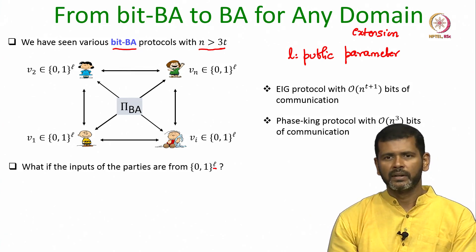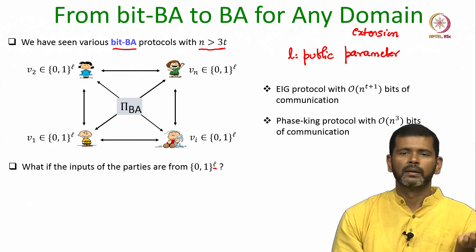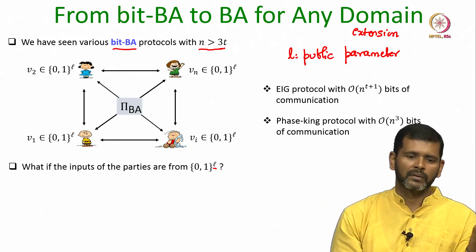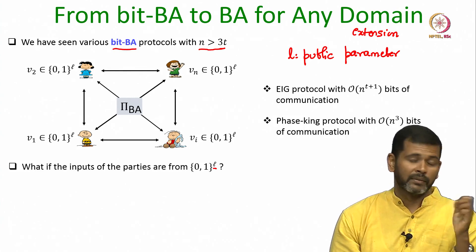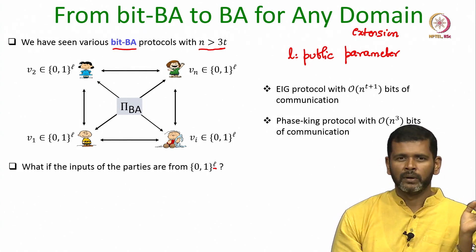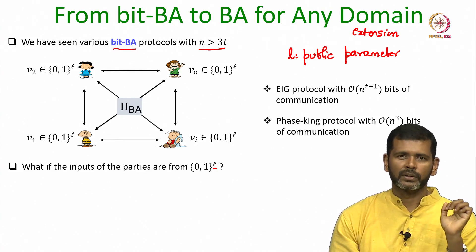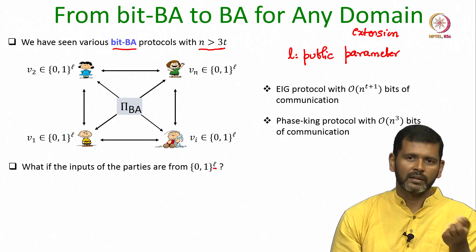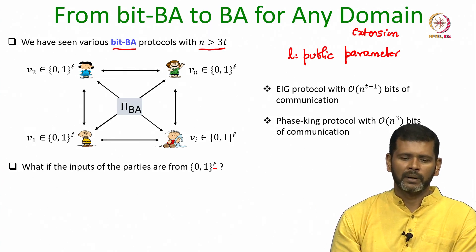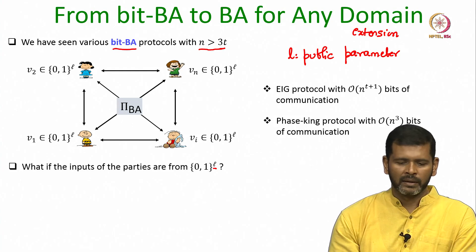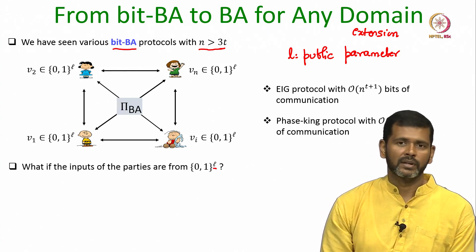Well, there are plenty of applications. Even in secure multiparty computation protocols, which we will see later, there are scenarios where parties need to reach agreement on very large messages. Also, if we consider blockchain applications where we have multiple copies of the same database replicated across n locations, after every few cycles the state of the individual copies gets updated and then we run a consensus protocol to reach agreement on an up-to-date version of the database. The database is not just a single bit — it is an enormously large database. So there are plenty of settings where the inputs of the parties are from a large domain, namely the set of all binary strings of length L bits.